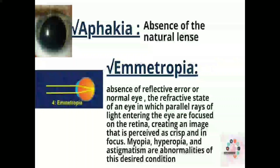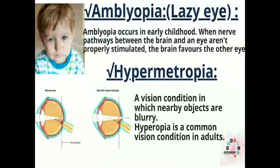Next is emmetropia. As you can see in the picture, it is the absence of refractive error, or the normal eye — the refractive state in which parallel rays of light entering the eye are focused on the retina, creating an image that is perceived as crisp and in focus. Myopia, hyperopia, and astigmatism are abnormalities of this desired condition.